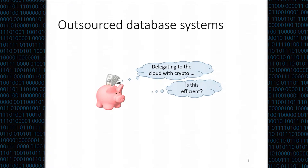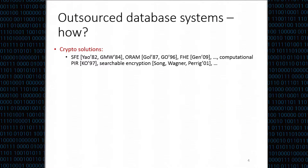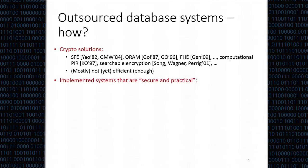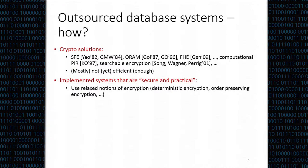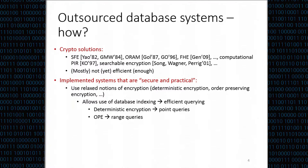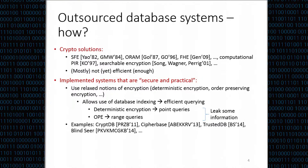One solution is to use cryptography to encrypt the records before uploading them to the server. The question is whether this is efficient—if we encrypt everything, the records, the index, and upload it, can we still efficiently retrieve and query the data? Many solutions exist, but mostly they are not efficient, like ORAM or PIR. That's why the literature tries to find a balance between security and practicality, using relaxed notions of encryption like deterministic encryption or order-preserving encryption, which allow efficient indexing and querying. Examples of such systems include CryptDB, CipherBase, TrustedDB, and Blind Seer. However, these notions leak some information, though they argue they offer reasonable security.